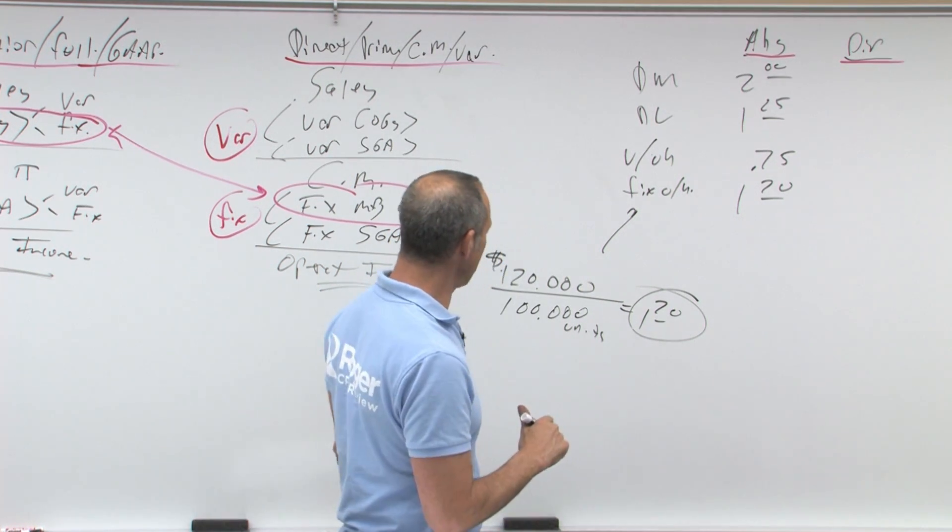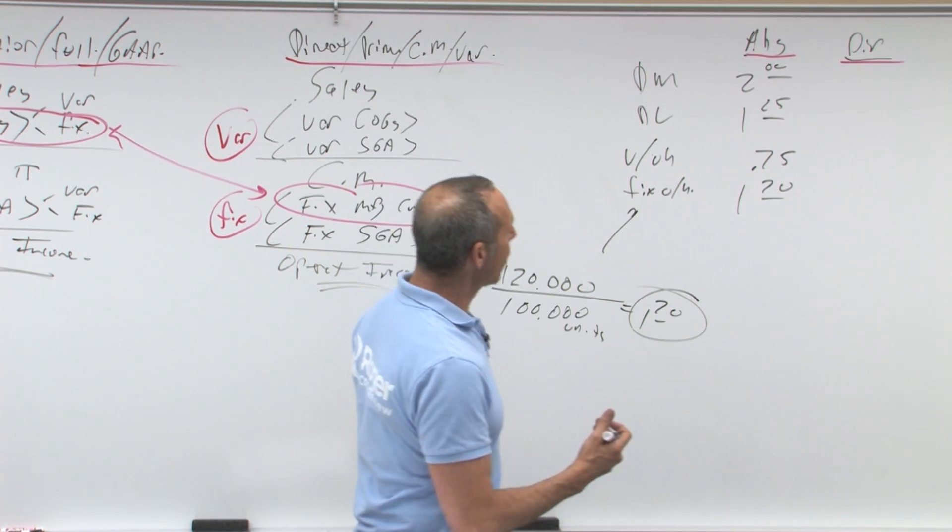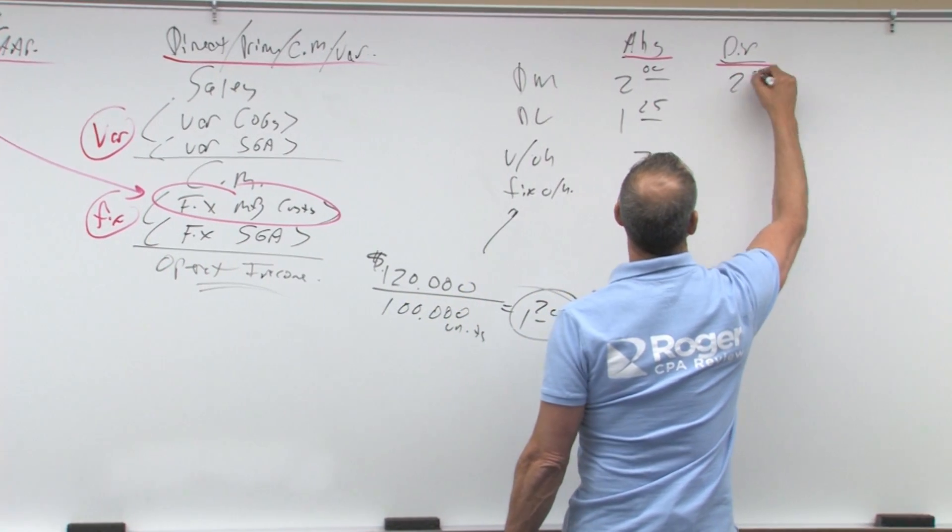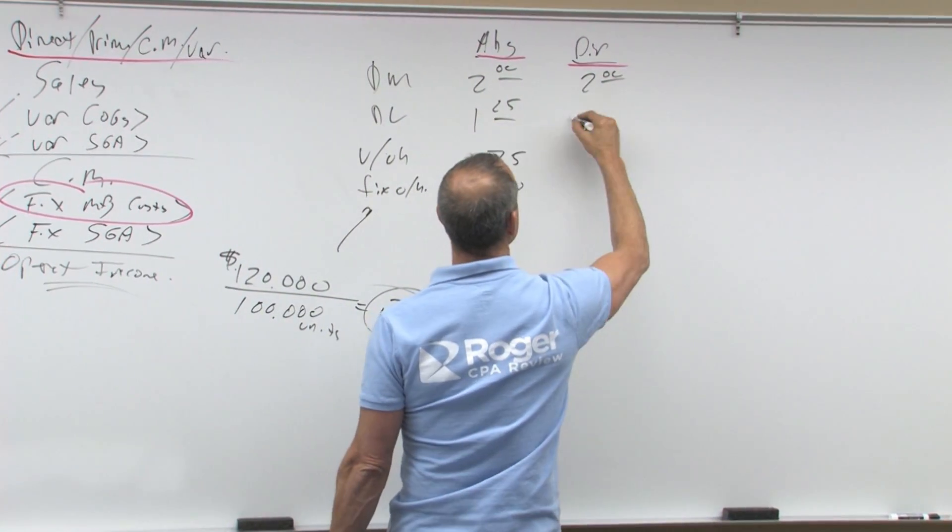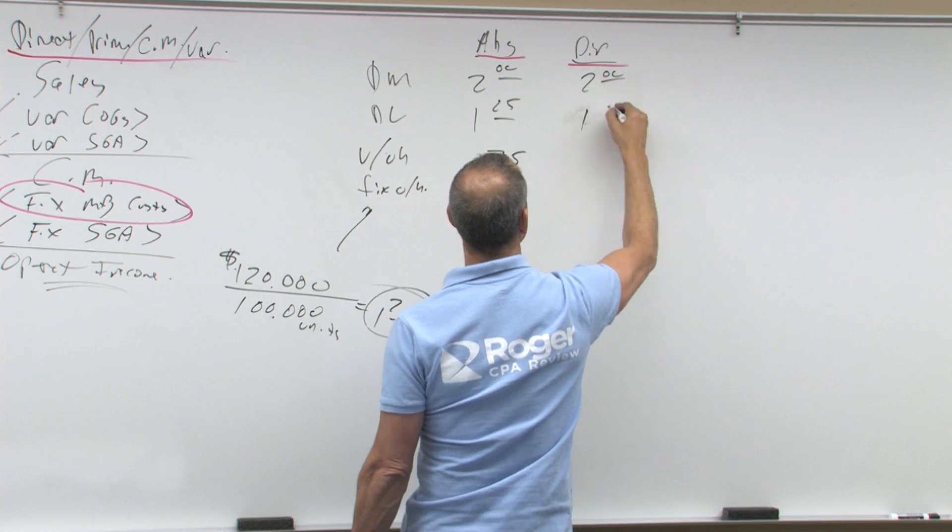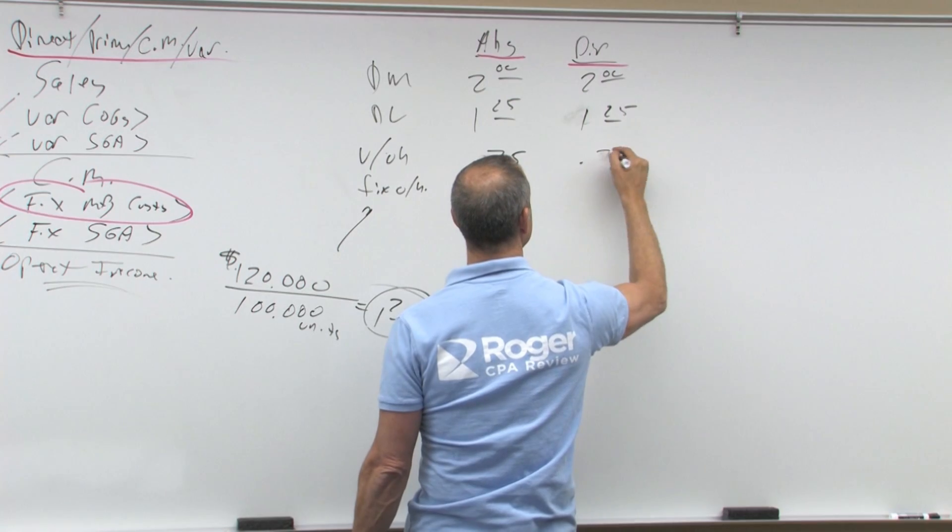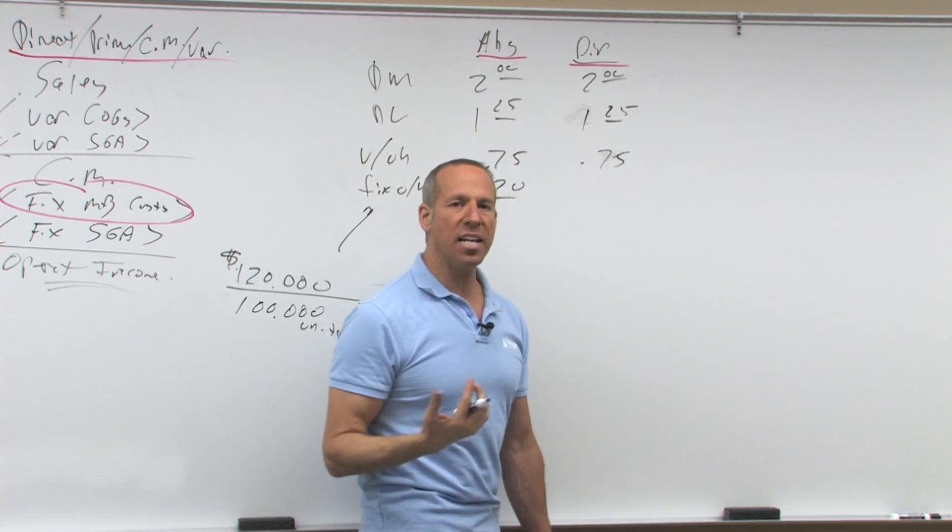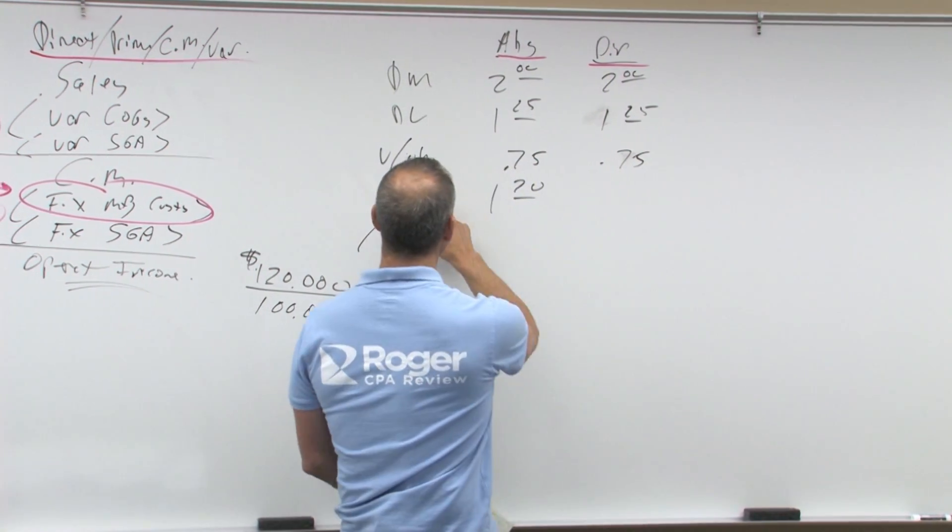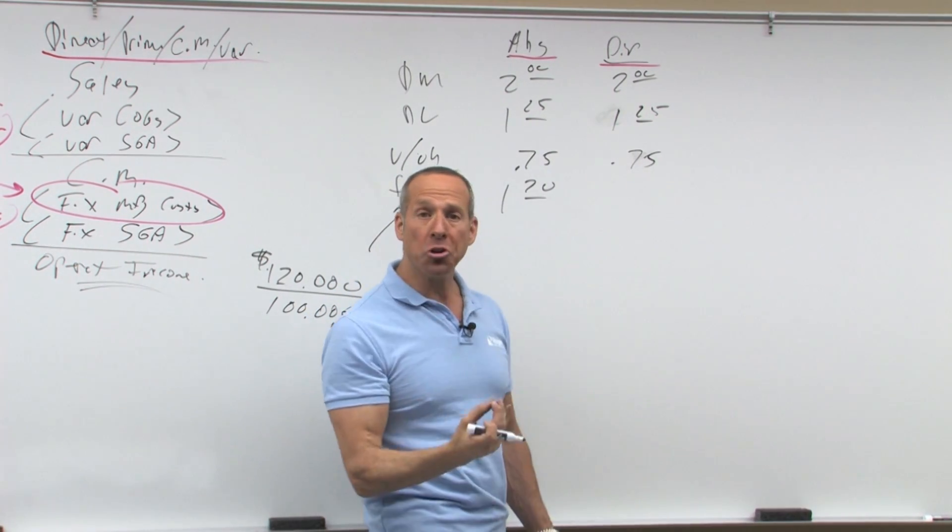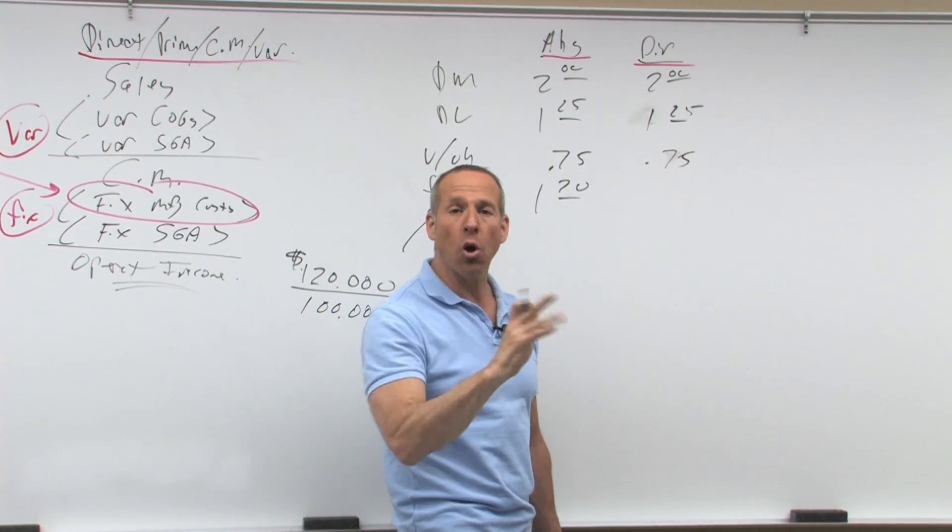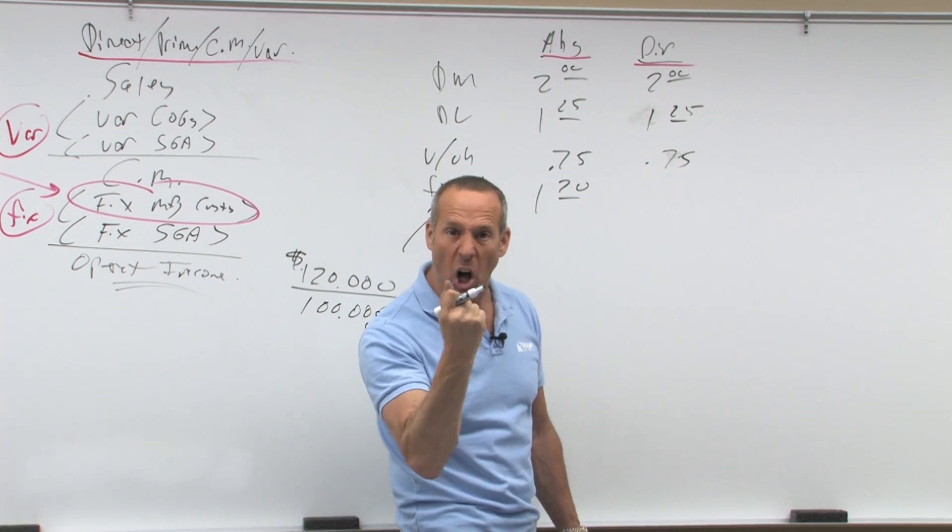So that's what's going to happen. Now, under direct, direct material is still the same. That gets put into ending inventory. Direct labor, that's going to get put into ending inventory. Variable overhead, that's going to get put into ending inventory. But the question is, what is an inventoriable cost? Well, of the fixed overhead, under direct variable prime, we're only going to capitalize the variable cost.